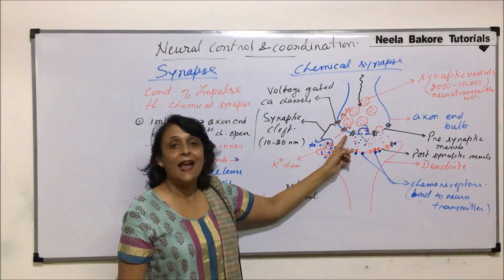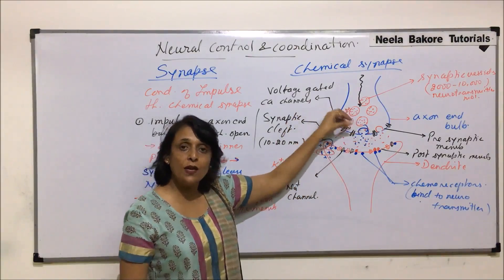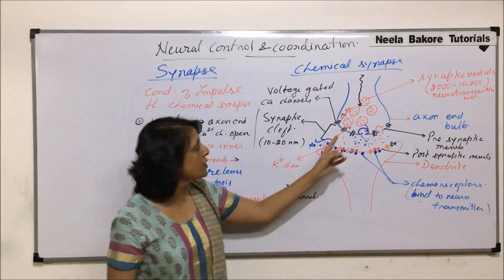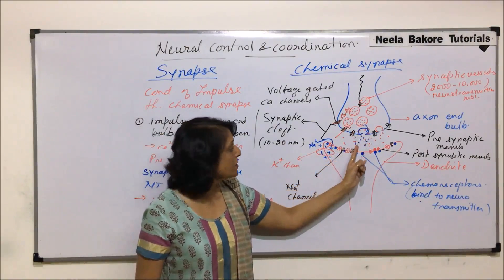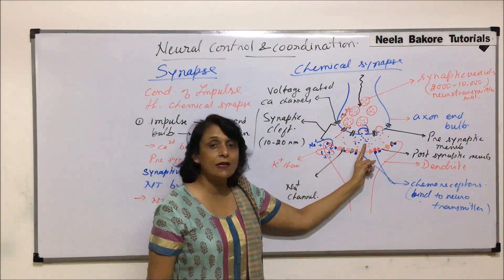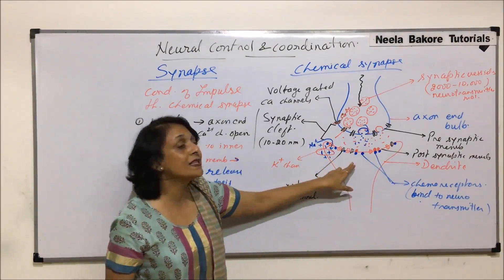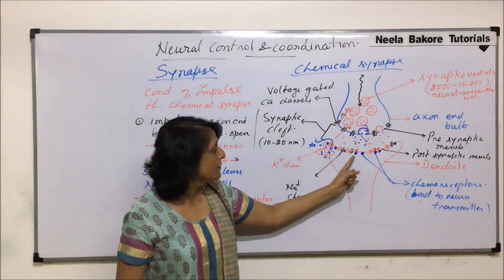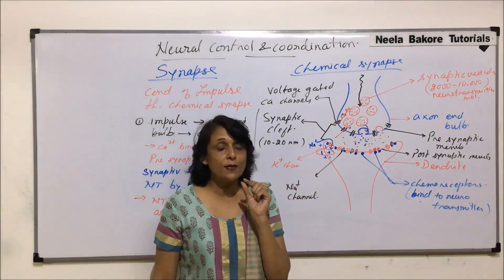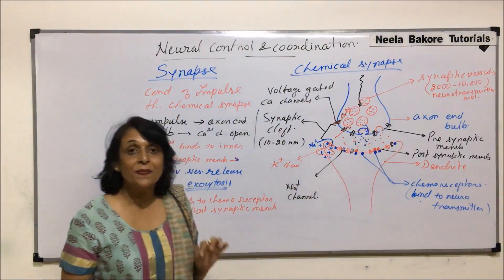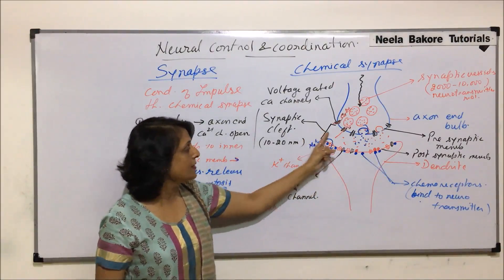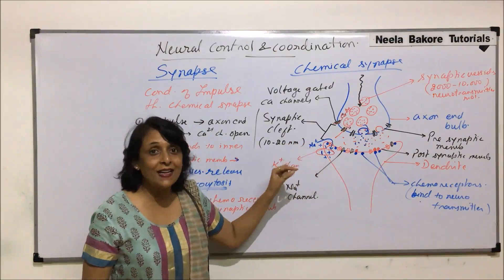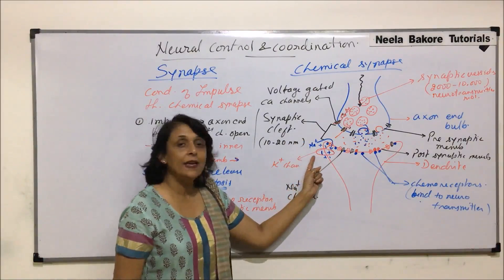To recap: the action potential reaches the axon end bulb, calcium channels open, calcium ions move into the axon end bulb, they bind on the inner side of the pre-synaptic membrane, this triggers rupturing of synaptic vesicles releasing the neurotransmitters. The chemical attaches to receptors on the post-synaptic membrane, a receptor-neurotransmitter complex forms, membrane permeability changes, and sodium channels open.